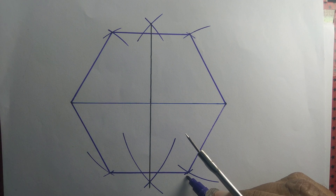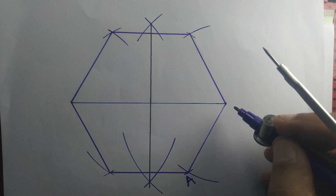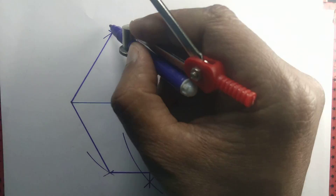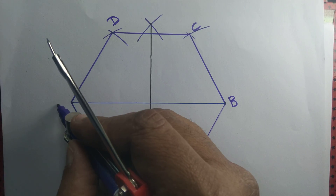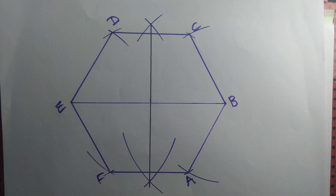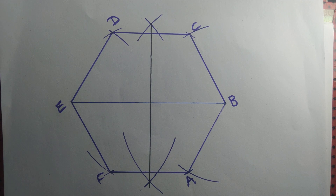Let's label the vertices A, B, C, D, E, F. A B C D E F is a regular hexagon whereby EB is equal to 10 centimeters.